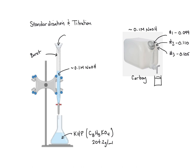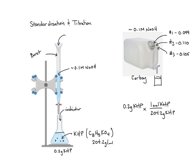We're going to put some quantity of KHP in the flask, stir it around, let it dissolve, and then we're going to titrate it. We put an indicator in so that we get that color change. Once the KHP is dissolved, we can figure out exactly how many moles are present. For example, if we have 0.2 grams of KHP: 0.2 grams × (1 mole / 204.2 grams) = 0.00098 moles of KHP.